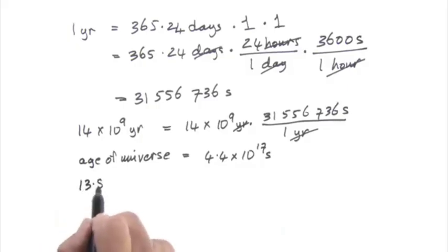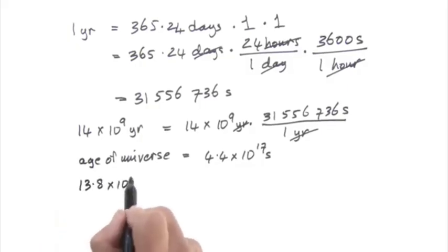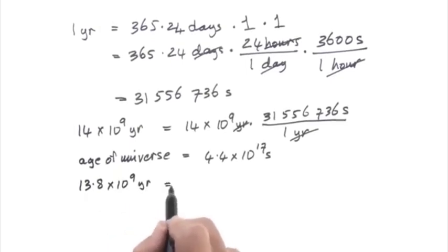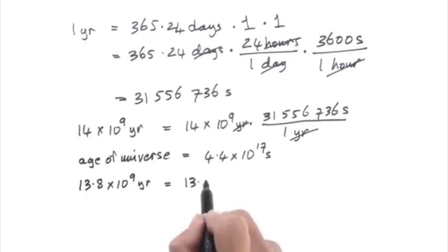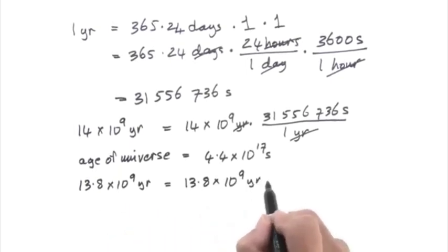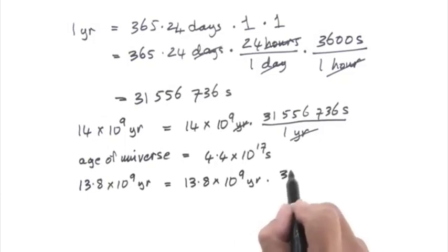Note: the number of significant figures is not the number of decimal places. It's the total number of digits in scientific notation. If a cosmologist said 13.8 billion years, then I'd have three significant figures and an implied error of a fraction of a percent.